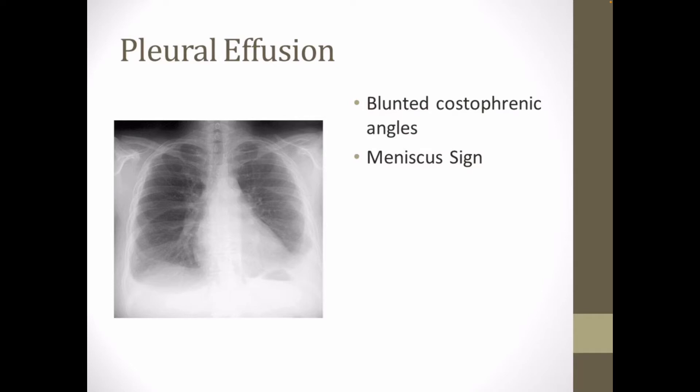Meniscus sign: eventually a meniscus will be seen on frontal films, laterally and gently sloping medially. With large volume effusions, mediastinal shift occurs away from the effusion side. Lateral films are able to identify a small amount of fluid as the costophrenic angles are deepest posteriorly.